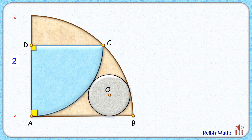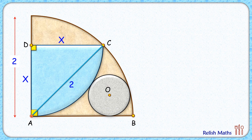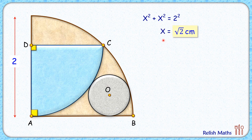Let's assume for the blue quadrant the radius is x centimeters, and thus the length DA will be x. Let's join the center of the bigger quadrant A to point C — this is also a radius of the quadrant and thus 2 cm. Applying Pythagoras theorem in triangle ADC, we get x² + x² = 2², and solving for x gives x = √2 cm. Thus DC length is √2 cm.